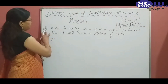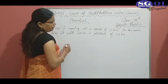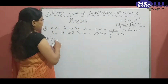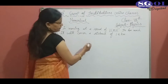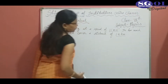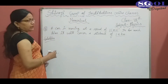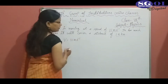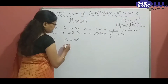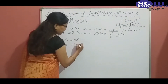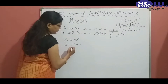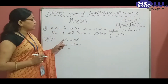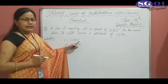Now, numerical number 5: a car is moving at a speed of 15 meter per second. In how much time will it cover a distance of 1.2 kilometer? In this question, speed is 15 meter per second and distance is 1.2 kilometer. Firstly, we will convert kilometer into meter, because the unit of speed is meter per second.